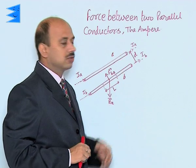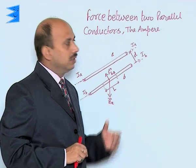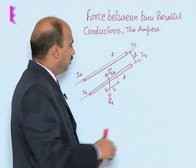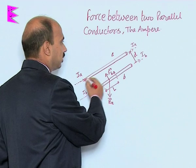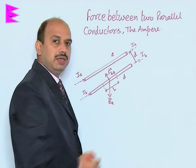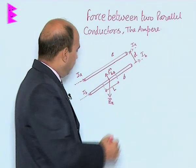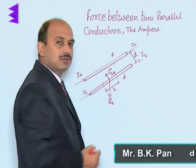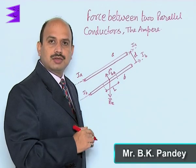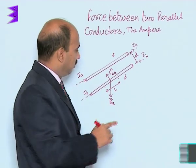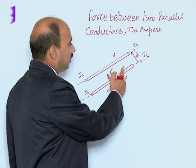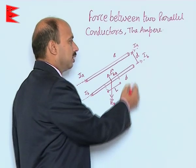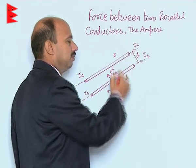We will see the force between two parallel conductors and then define the ampere. There are two conductors, conductor A and conductor B. Current I_A is flowing in one direction and I_B in the same direction. These are two parallel conductors separated by a distance D.